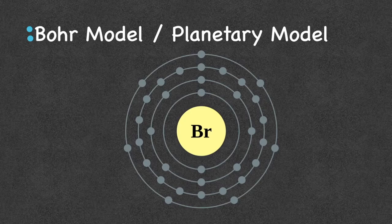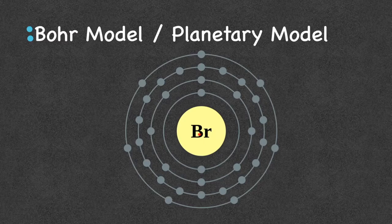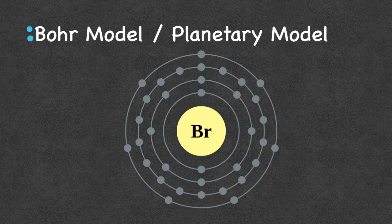Niels Bohr called his model the planetary model, and we can see why — the nucleus is the center of the atom, like the sun, and the electrons orbit in their energy levels at different distances around it. The first energy level has the least energy, all the way out to the outermost energy level, which has the most.